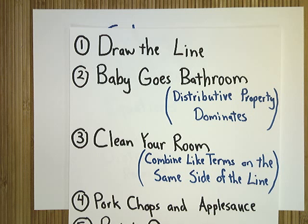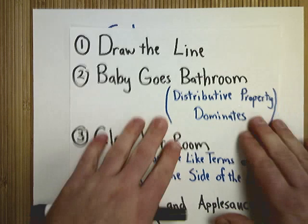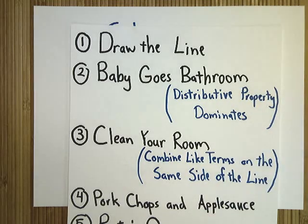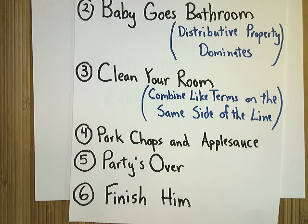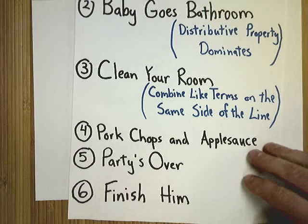So Baby Goes Bathroom is the idea that no matter what, you have to do the distributive property first, and that really comes into play in one of the sample problems. The third step is Clean Your Room, combine like terms on the same side of that line. Then we've got Pork Chops and Applesauce. Party's Over is where you get rid of that friend who's not really a friend but a friend of a friend first, and then your friend.